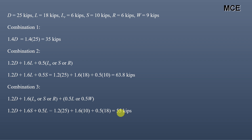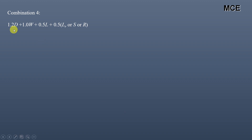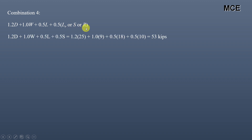Load combination 4 is 1.2D + 1.0W + 0.5L + 0.5 × (Lr or S or R). Since snow load is the largest of the three, we use 0.5S. Putting in values: 1.2 × 25 + 1.0 × 9 + 0.5 × 18 + 0.5 × 10 = 30 + 9 + 9 + 5 = 53 kips.